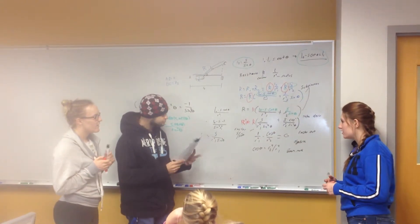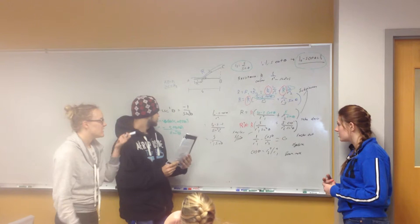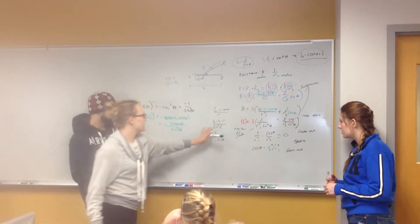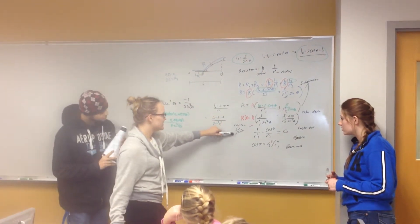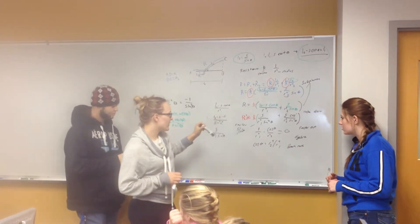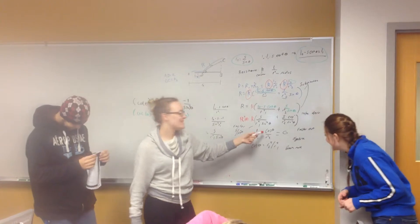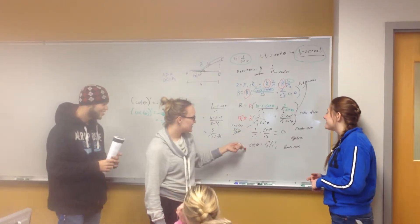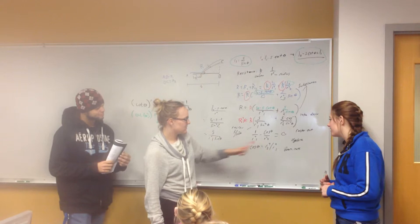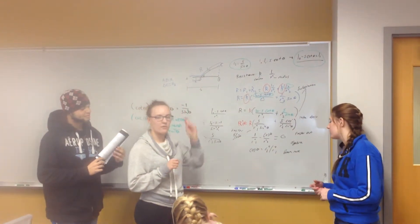So then you have to find common denominators. And once you find common denominators you can factor out S over sine 2 theta. And because that's like a number, you can just multiply this part — you can set this part equal to zero. So then you get cosine of theta equals R2 over R1 to the fourth.